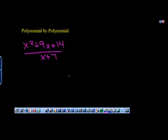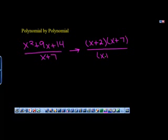You can also divide polynomials by polynomials by factoring. If I take this polynomial and factor it, I get x plus 2 times x plus 7. I'm still dividing it by x plus 7. They both have an x plus 7, they can cancel out, leaving me with x plus 2.